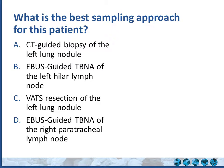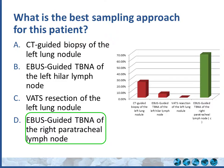What's the best sampling approach for this patient? Do you want a CT-guided biopsy of the left lung nodule, EBUS-TBNA of the left hilar lymph node, VATS resection of the left lung nodule, or EBUS-guided TBNA of the right peritracheal lymph node? 69% of you said to sample the right peritracheal lymph node, and about 25% said to go after the lung nodule with transthoracic needle aspiration. The correct answer is four — go after the contralateral mediastinal lymph node. We'll go over staging strategies.